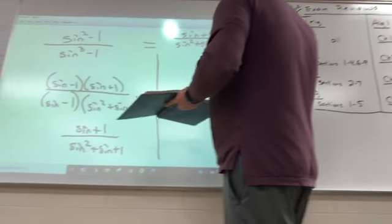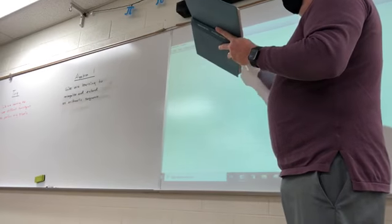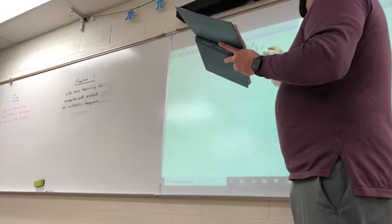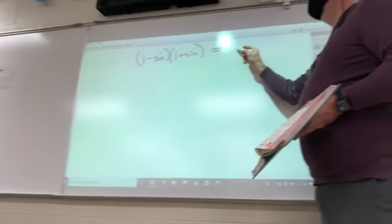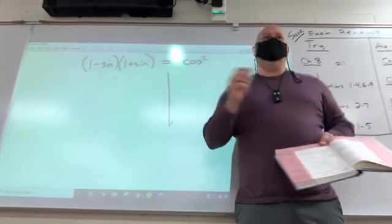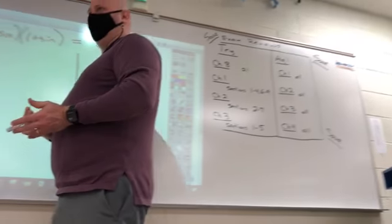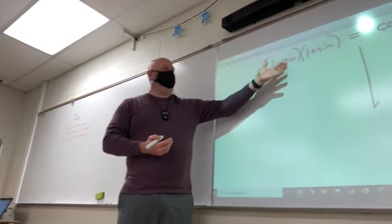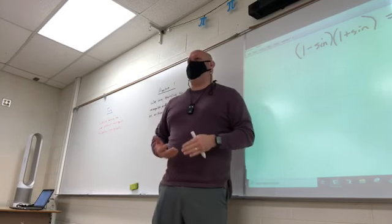I want you to look at number one. What they want us to do for number one is basically just take one minus sine and one plus sine, turn that into cosine squared. I want you to do it as a trig proof, but for these, basically, we're only allowed to work on the left side. They're just telling us what to end with.